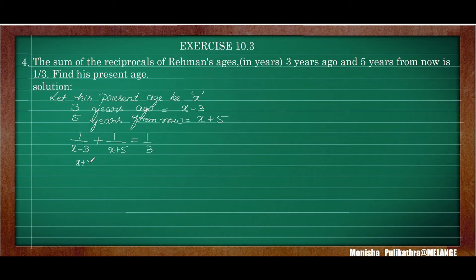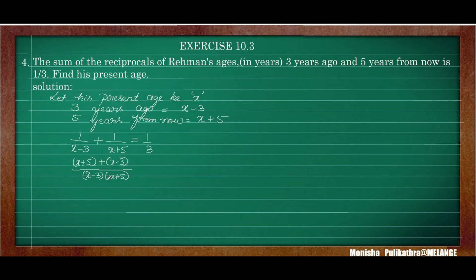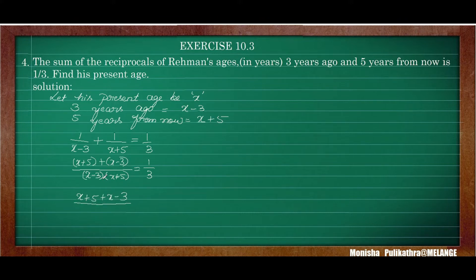Simplifying: x plus five plus x minus three, all divided by x minus three into x plus five, equals one by three. Taking LCM, the denominators combine. We get x plus five plus x minus three in the numerator, giving two x plus two, divided by x squared plus five x minus three x minus fifteen, equal to one by three.